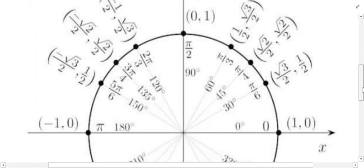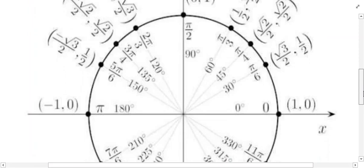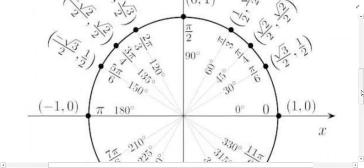So make sure you review this. If you haven't seen it since your trig class, make sure you know where the angles are located, how to convert the angles between degrees and radians, and then for each angle, you need to know the x-y pair on the unit circle that corresponds to that particular angle.